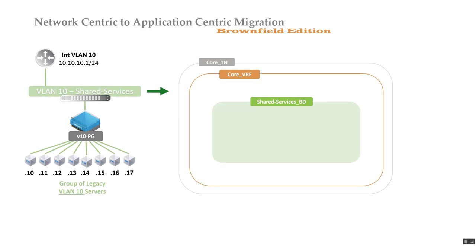Then we start creating the legacy constructs and modeling them. One of the things we do is create a bridge domain. My strategy is that if VLAN 10 is used for shared services, and a show VLAN brief on the switch says 'shared services,' I use the name of the VLAN. I name the bridge domain to reflect the VLAN name, not the VLAN ID.